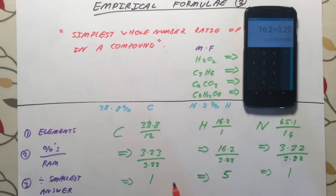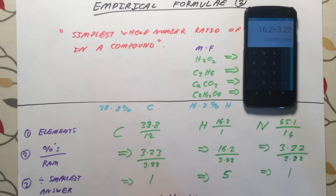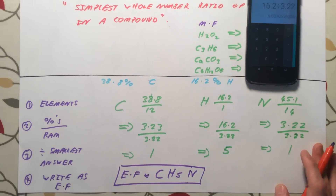By dividing by the smallest number, we've simplified the ratio to 1 to 5 to 1. To finish the answer, we write this as the empirical formula. For every 1 carbon atom, we have 5 hydrogens and 1 nitrogen. We don't write the 1 subscript, so our empirical formula is CH5N.